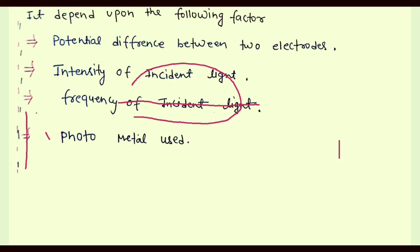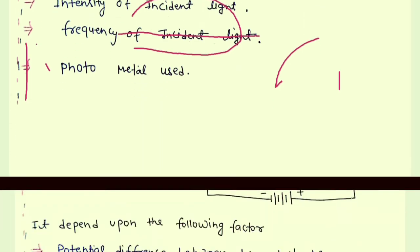Stopping potential is the minimum retarding potential at which photocurrent becomes zero. To find the stopping potential, we decrease the potential difference of electrodes. We keep decreasing and keep decreasing, in negative also, until photocurrent becomes zero. And this potential is known as stopping potential.